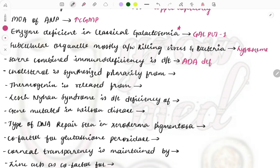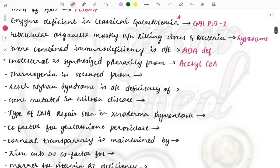Cholesterol is synthesized primarily from acetyl CoA. So acetyl coenzyme A will break down to give this cholesterol. Then, thermogenin is released from which organelle? It is the mitochondria.